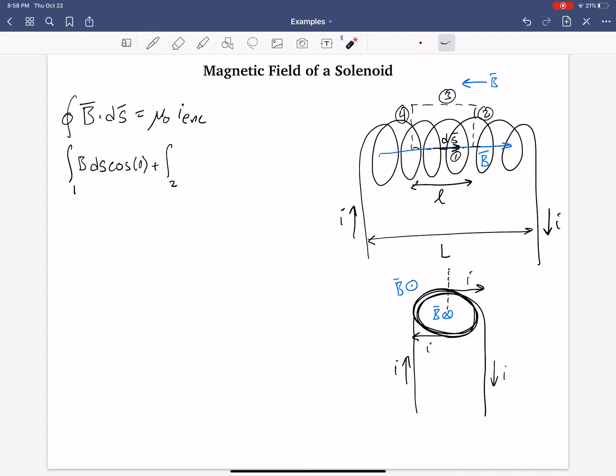Then we need to add the integral for segment 2. Segment 2, dS, is going up now, right? I suppose I just as easily could have gone this direction, but I'm not. I'm going up for segment 2, so that's our dS direction, and that's perpendicular to B. So now, that angle is 90.